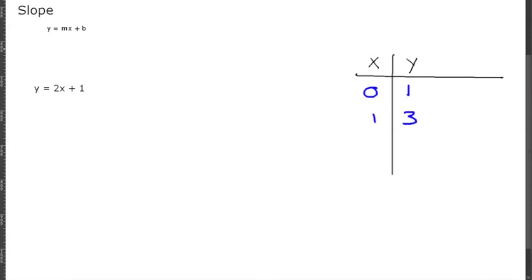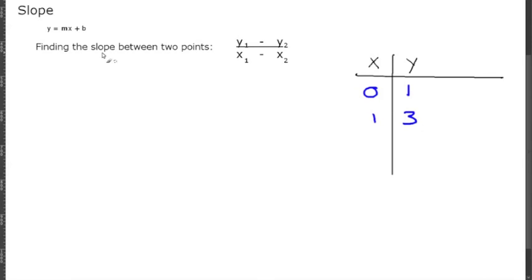What if we're not given the graph and not given the equation? You can still find the slope between two points using a simple formula: change in Y over change in X, which is the difference in the Y values over the difference in the X values.